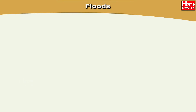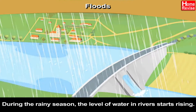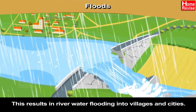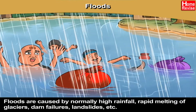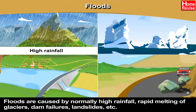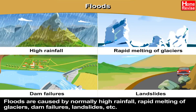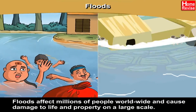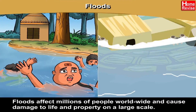During the rainy season, the level of water in rivers starts rising. This results in river water flooding into villages and cities. Floods are caused by abnormally high rainfall, rapid melting of glaciers, dam failures, landslides, etc. Floods affect millions of people worldwide and cause damage to life and property on a large scale.